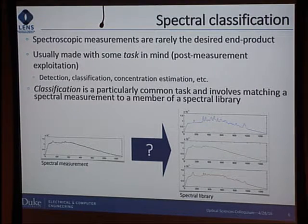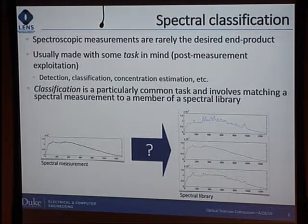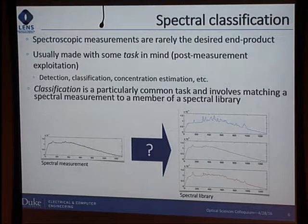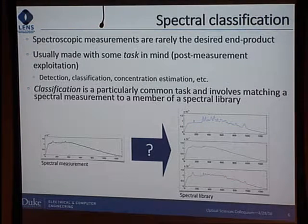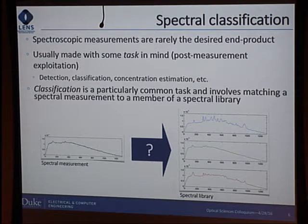Having gained confidence with DMDs, we turned to something more meaningful: spectral classification. When you do spectroscopy, you're almost never doing it because you care about the spectrum itself — there are exceptions, but people used to have drawers full of photographs and now have hard drives full of them. Very few people keep pretty spectra. Almost always, you're doing spectroscopy because you're going to do detection or classification or some other exploitation task. Classification is particularly common: I have a library of things, I get a measurement, and I want to know which one it matches.